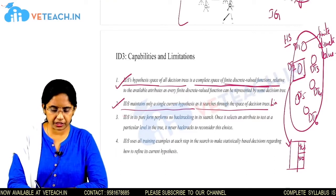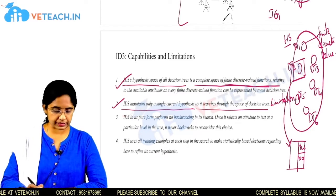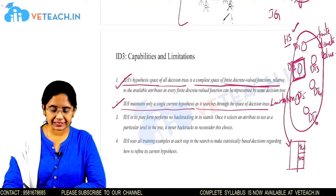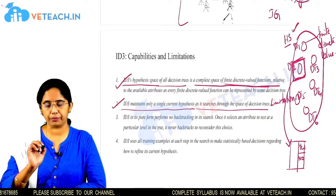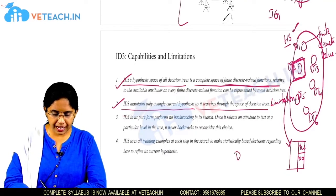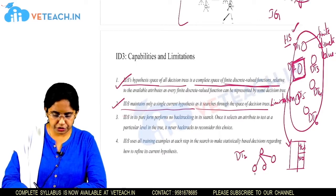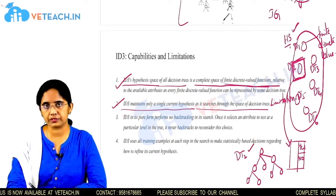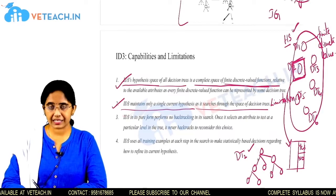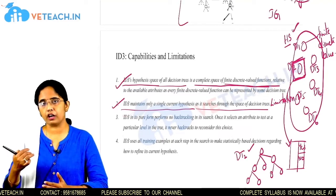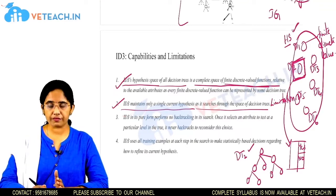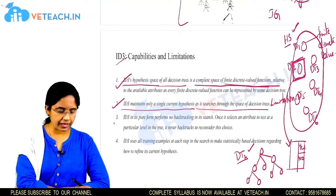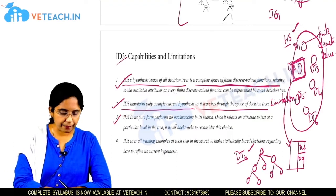A limitation of ID3 is that it maintains a single current hypothesis as it searches through the space of decision trees. For example, if we select decision tree 2 (dT2) from the hypothesis space and start evaluating with that hypothesis, we continue processing all training examples. Once we fix to this particular hypothesis, we cannot change it — that is one of the limitations of the ID3 algorithm.